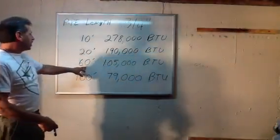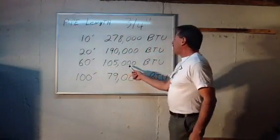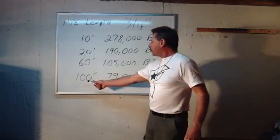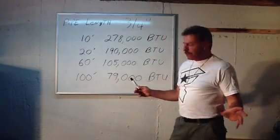Look what happens when you go to 60 foot. Now you'll only get 105,000 BTUs at the end of that 60 foot run. And look what happens when you travel 100 foot.